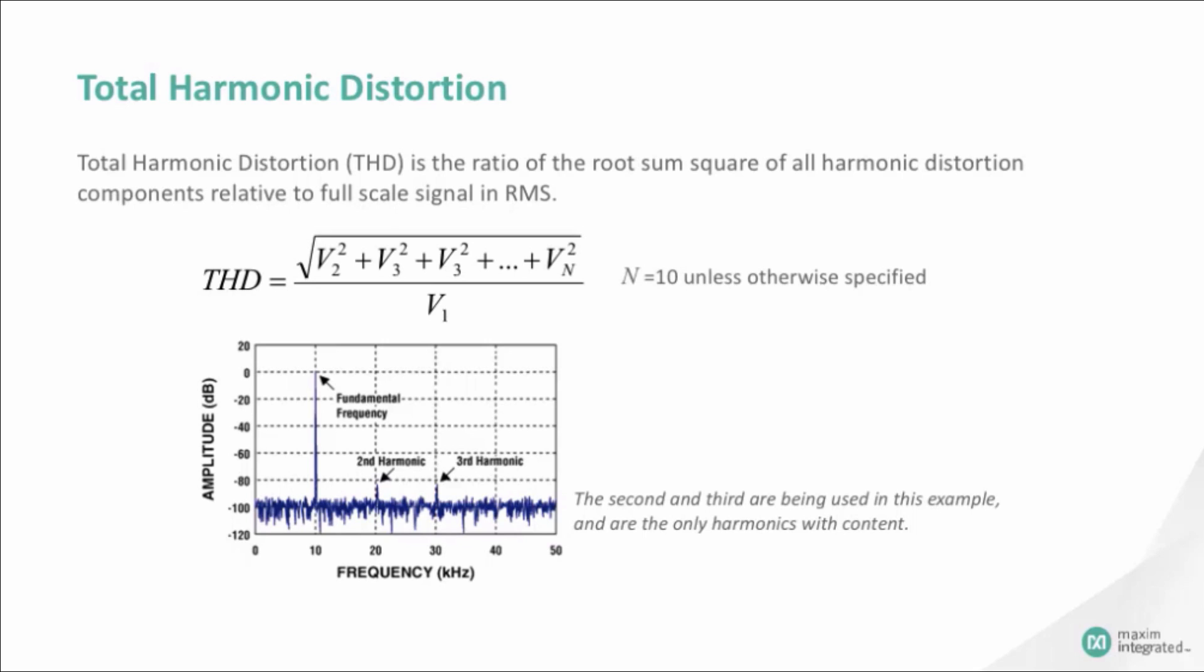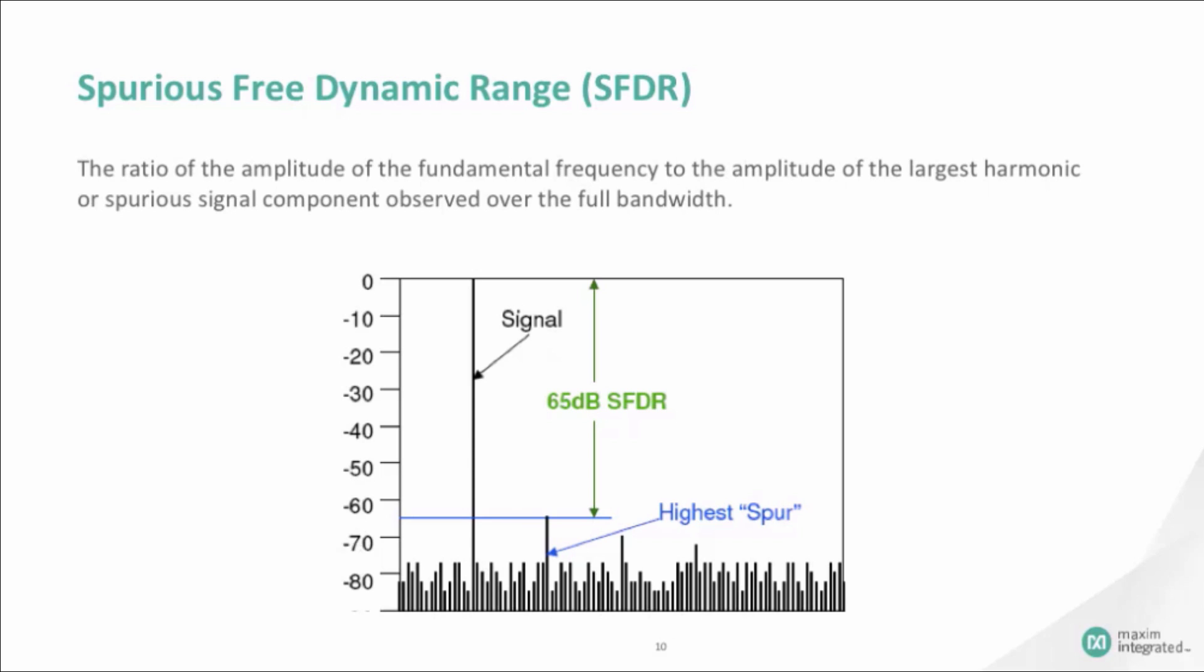Spurious free dynamic range is the ratio of the amplitude of the fundamental frequency to the amplitude of the largest harmonic or spurious signal component observed over the full bandwidth. In a communication system, this specification defines the capability of the ADC to decipher a carrier signal from other noise or any other spurious frequency.